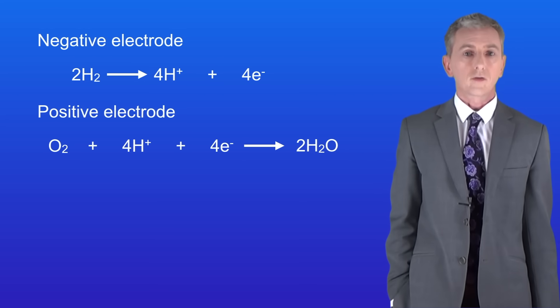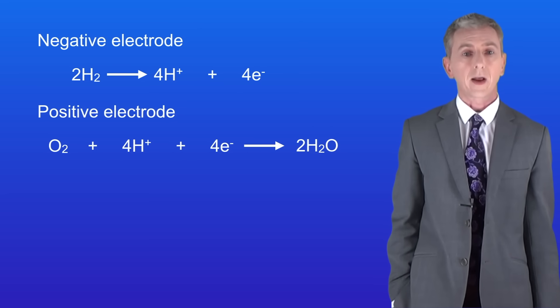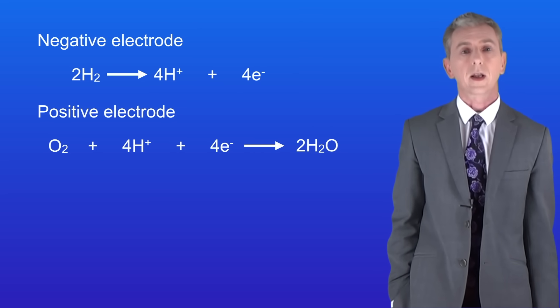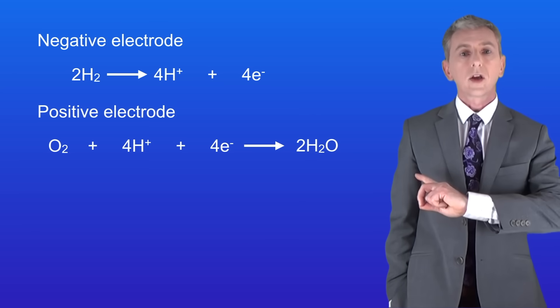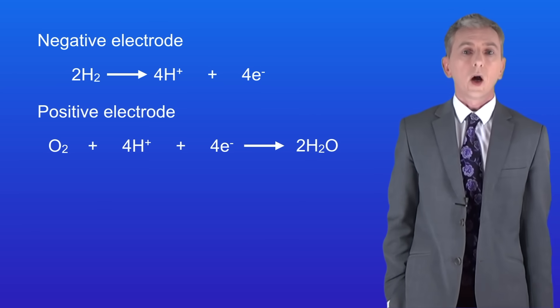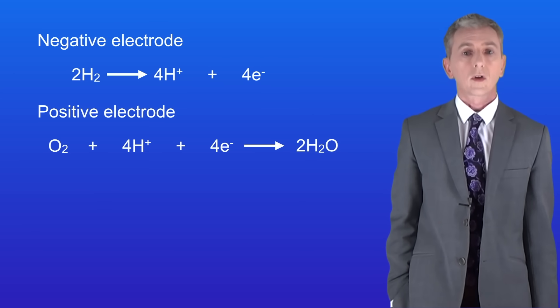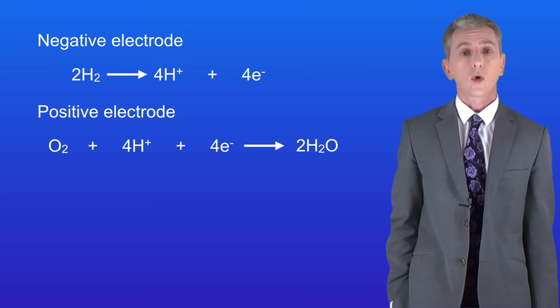At the positive electrode, oxygen molecules combine with the electrons and the hydrogen ions produced at the negative electrode. The half equation for the positive electrode is: O₂ + 4H⁺ + 4e⁻ → H₂O.